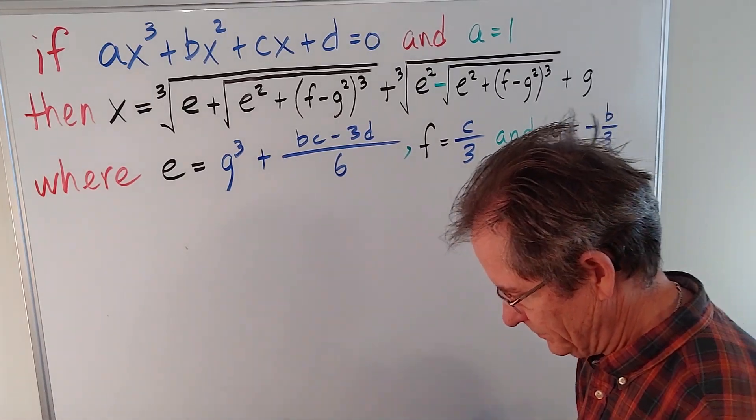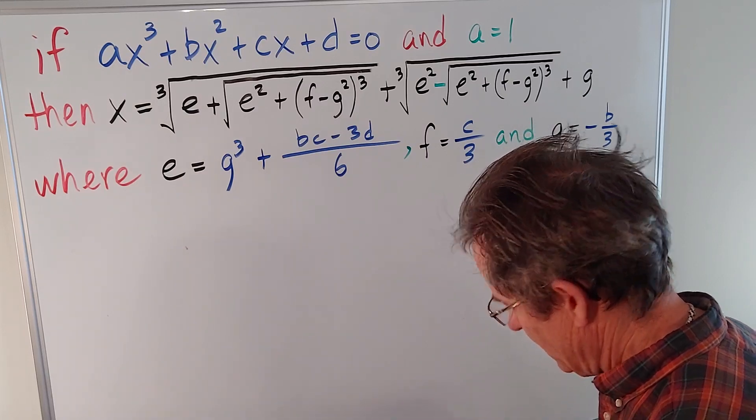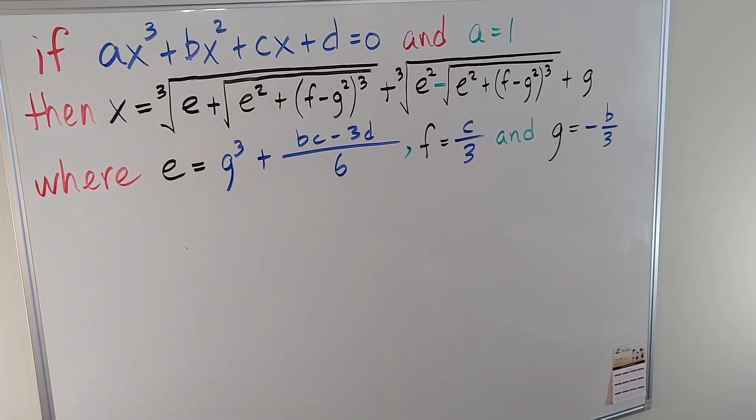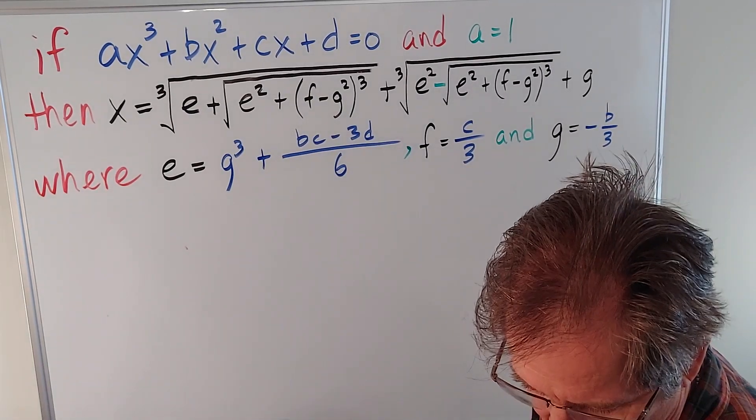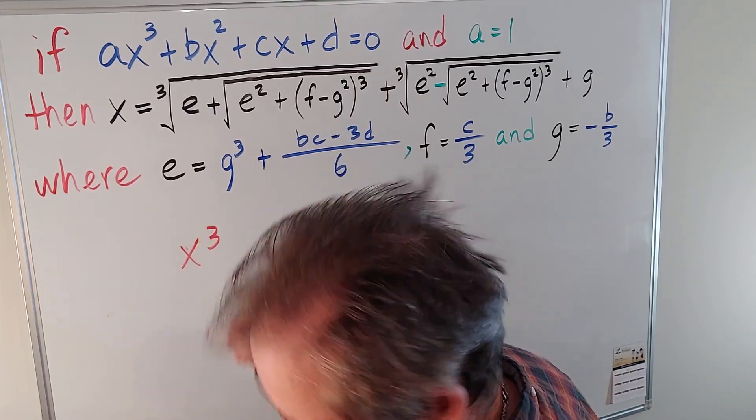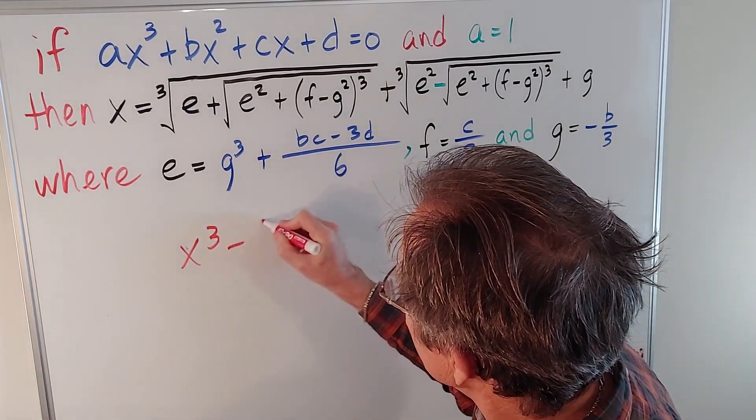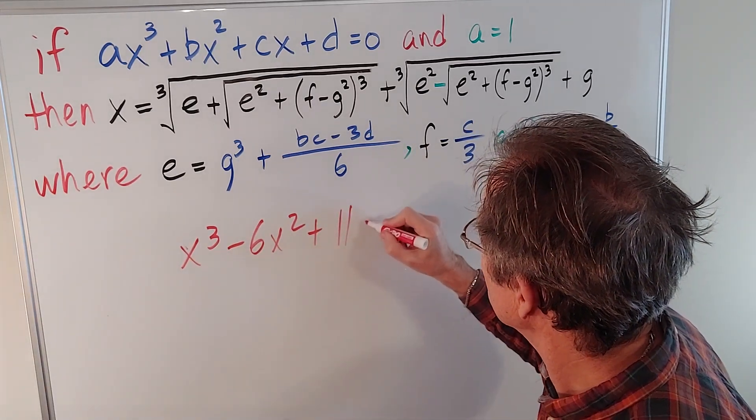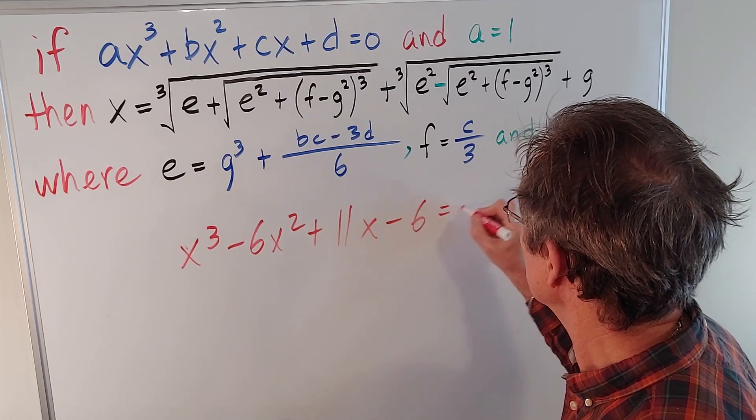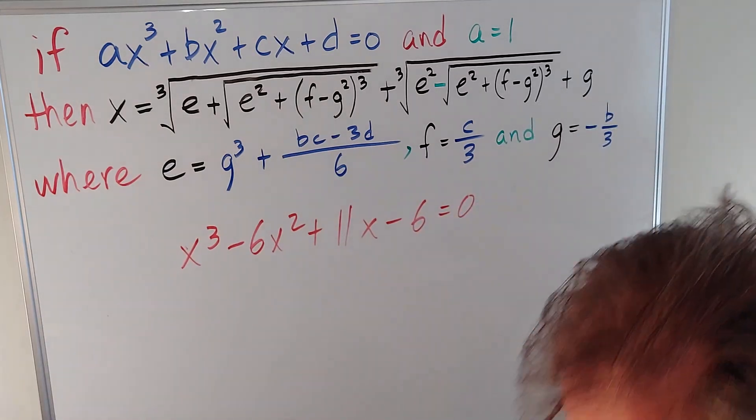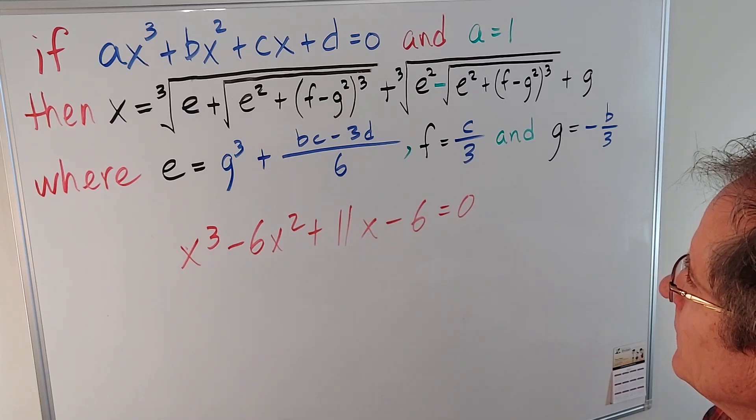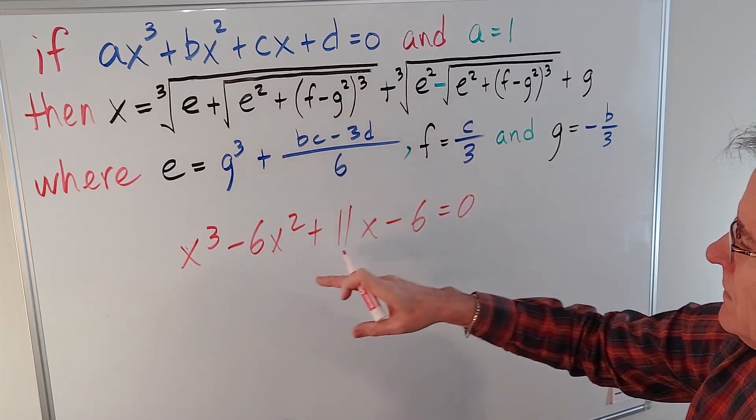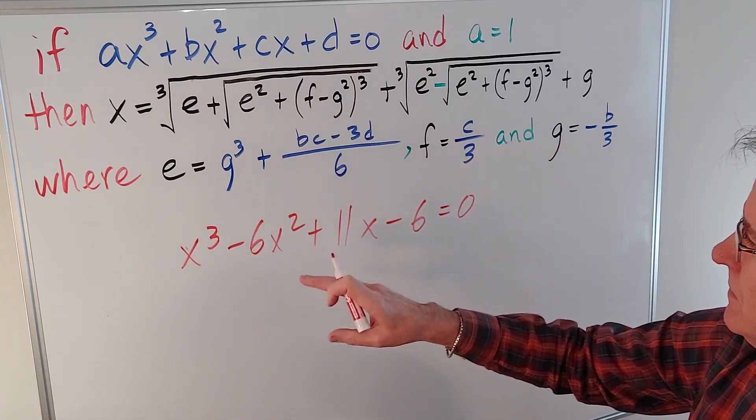And one last example. Let's say I have x cubed minus 6x squared plus 11x minus 6 equals 0. We can go through the whole argument as before, finding e, f, and g based on b, c, and d.